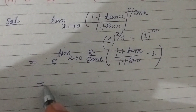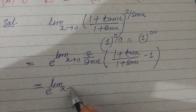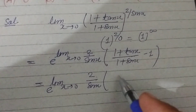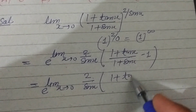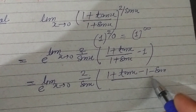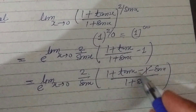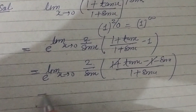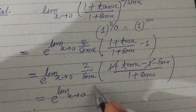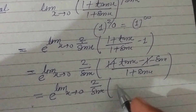So we get e to the power limit x tends to 0, 2 upon sin x. Solving the numerator: 1 + tan x - 1 - sin x over 1 + sin x. This simplifies to e to the power limit x tends to 0, 2 upon sin x times (tan x - sin x).